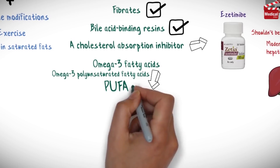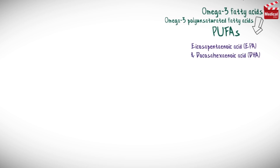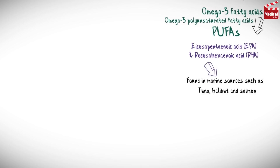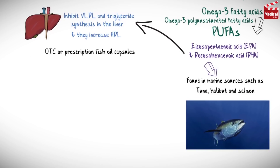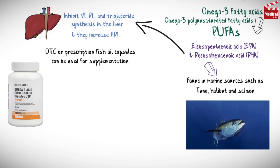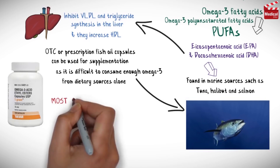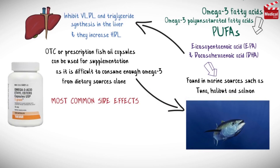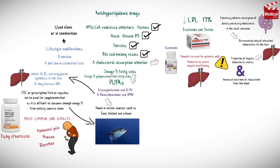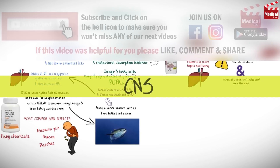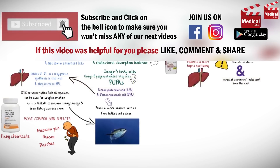Omega-3 polyunsaturated fatty acids — icosapentaenoic acid (EPA) and docosahexaenoic acid (DHA) — are found in marine sources such as tuna, halibut, and salmon. They inhibit VLDL and triglyceride synthesis in the liver and increase HDL cholesterol. Over-the-counter or prescription fish oil capsules can be used for supplementation, as it is difficult to consume enough omega-3 fatty acids from dietary sources alone. The most common side effects include gastrointestinal effects such as abdominal pain, nausea, diarrhea, and a fishy aftertaste.